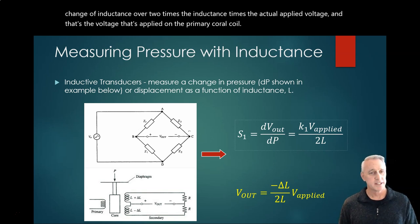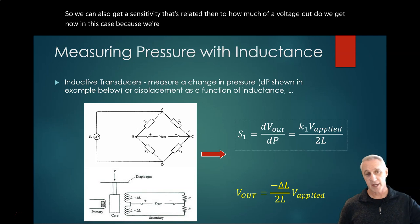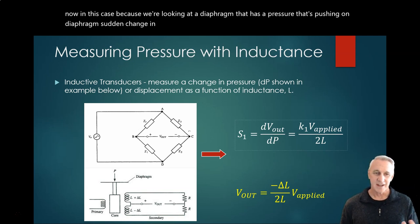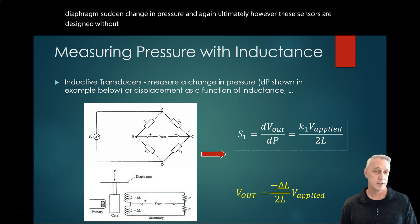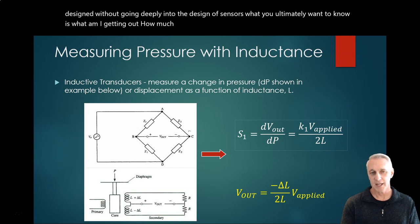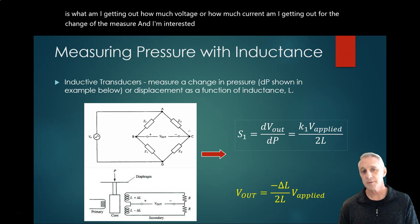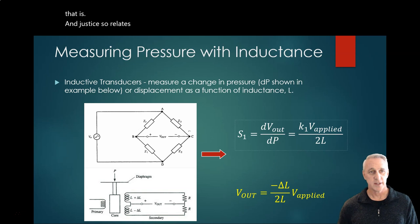We can also get a sensitivity that's related to how much voltage out we get. In this case, we're looking at a diaphragm that has pressure pushing on it—some change in pressure. Ultimately, however these sensors are designed, without going deeply into sensor design, what you ultimately want to know is: what am I getting out? How much voltage or current am I getting out for the change of the measurand I'm interested in? That's what we're always coming back to, and that relates to the sensitivity.